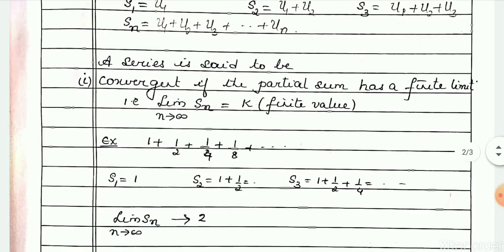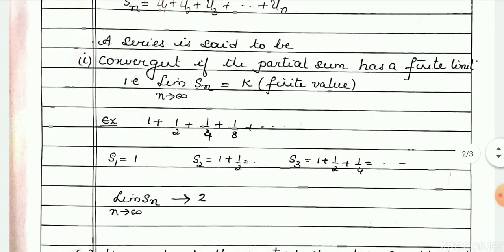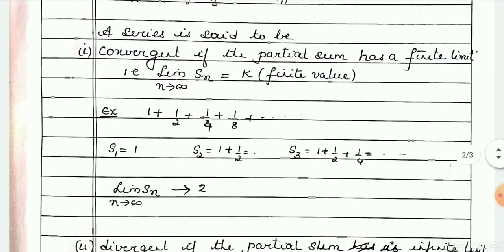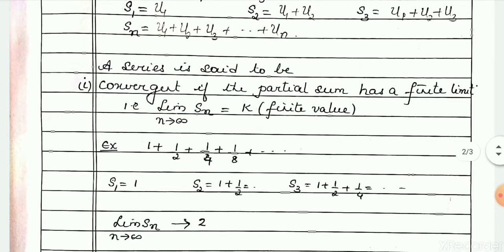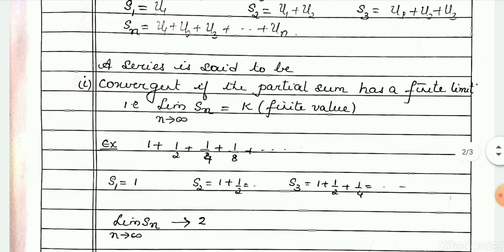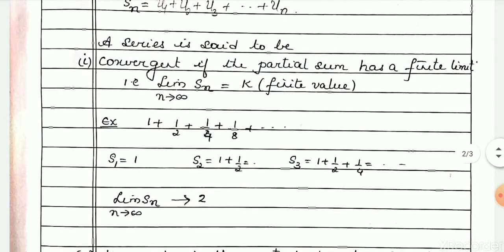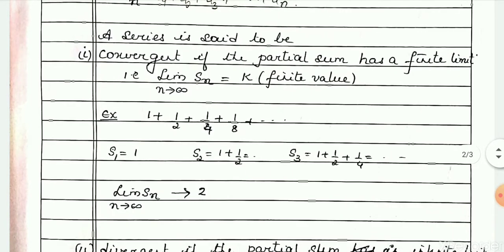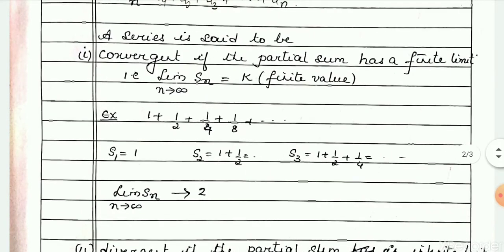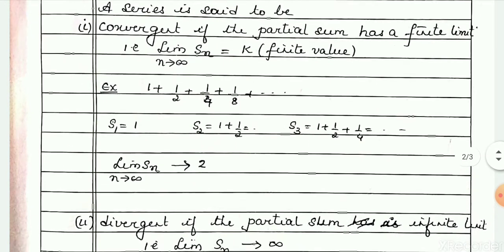Using partial sums, how do you check whether a series is convergent, divergent, or oscillatory — in other words, what is the nature of the infinite series? We say a series is convergent if the partial sum has a finite limit. That is, the limit of s_n as n tends to infinity equals k, which is a finite value.